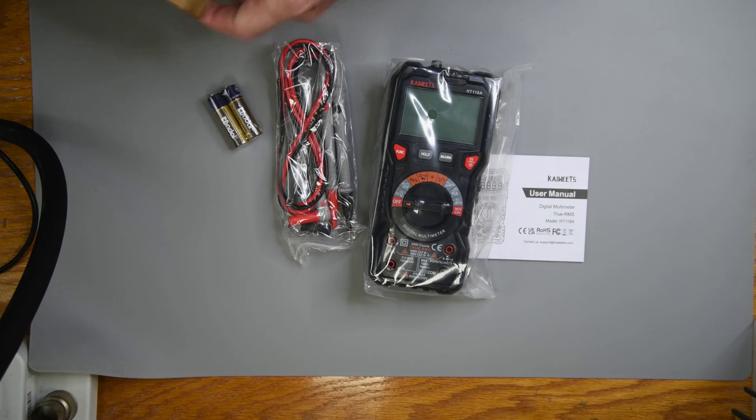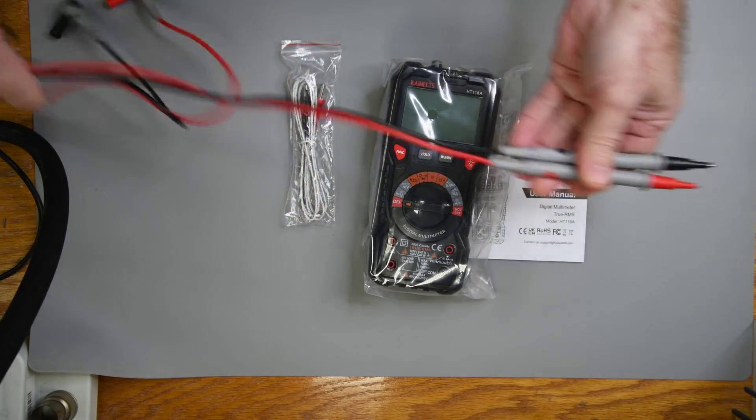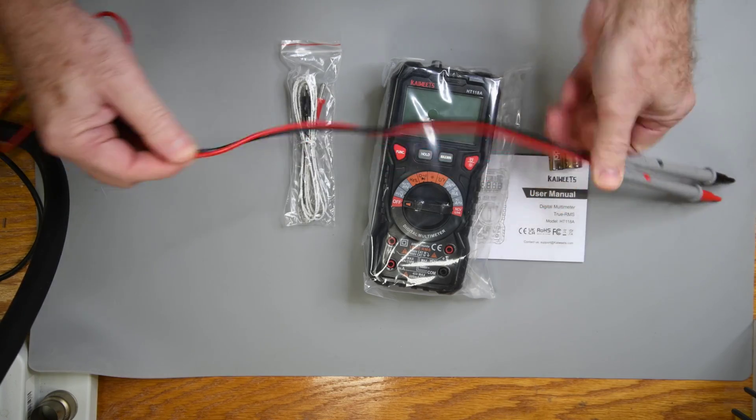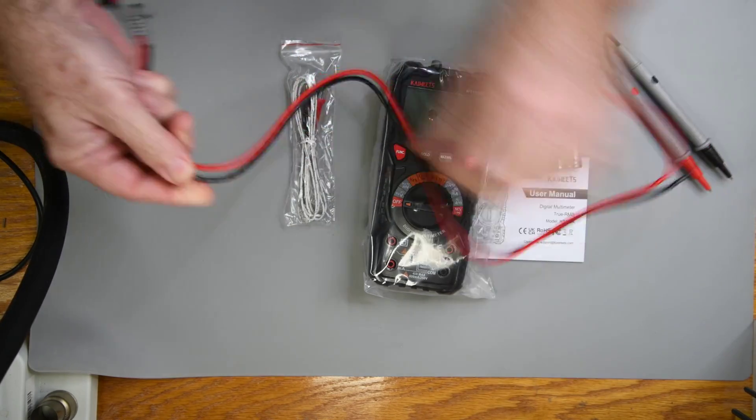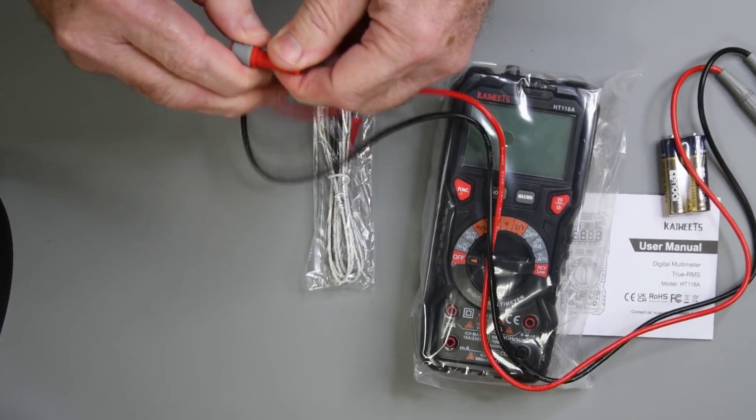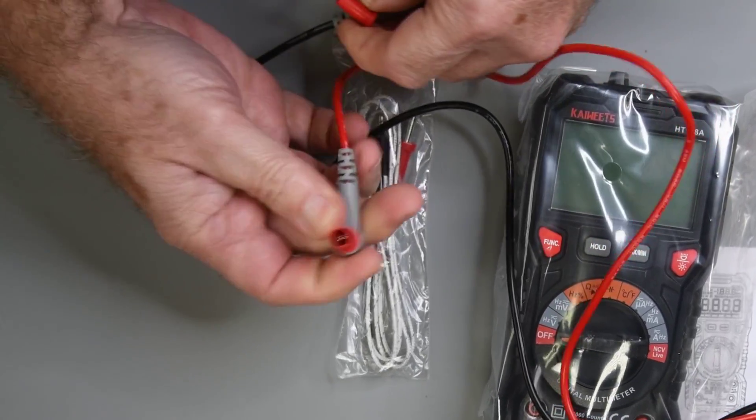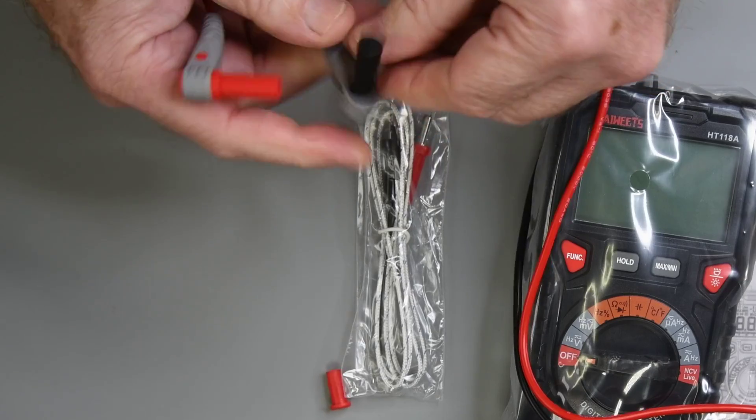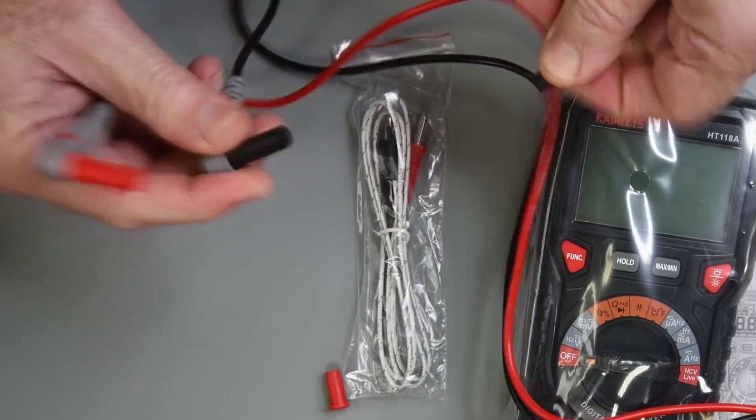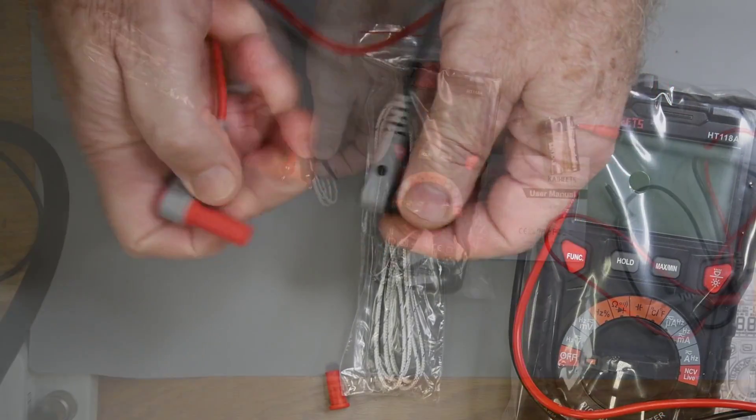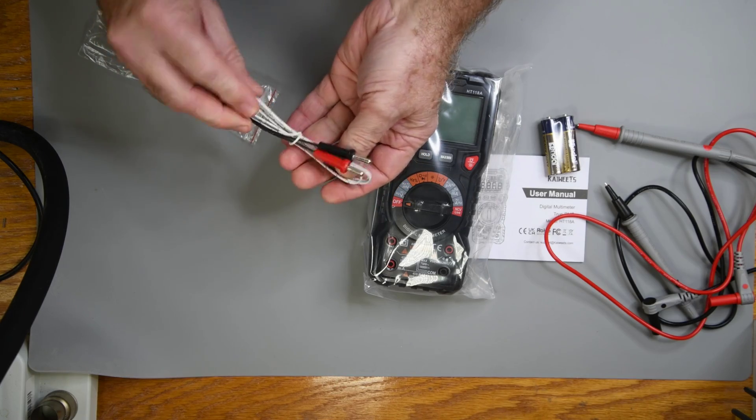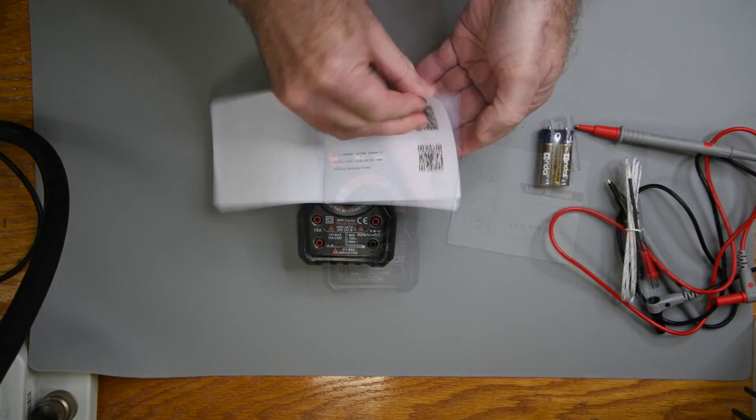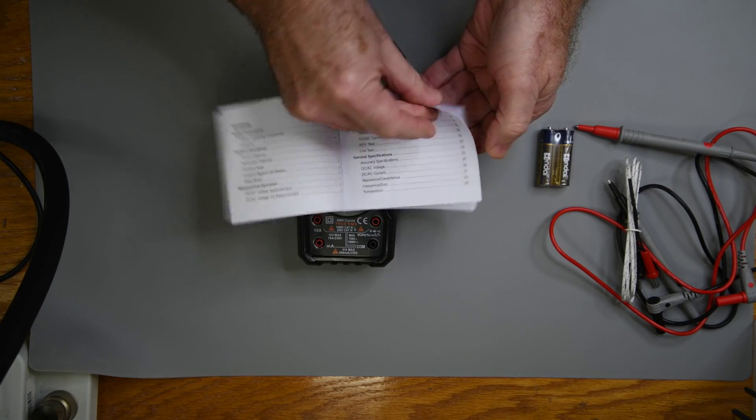It comes with two AA batteries, a basic set of test leads. These will be the reason this ends up being a $50 meter in the end. A thermocouple, and the meter itself. Almost forgot, a tiny user manual.